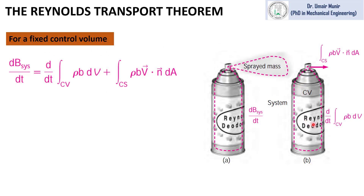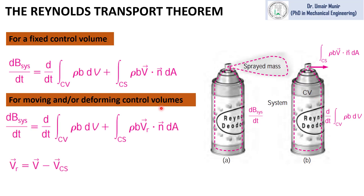As we can see, this bottle is not moving, so its control volume is fixed. For a moving control volume — such as a moving aeroplane or a moving piston where the boundaries of the control volume are moving — we replace velocity v with v_r, where v_r is the relative velocity.